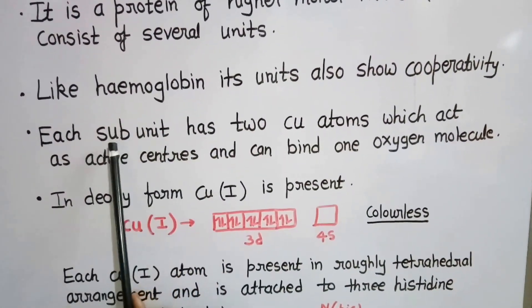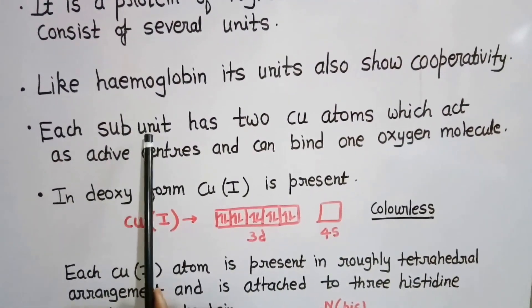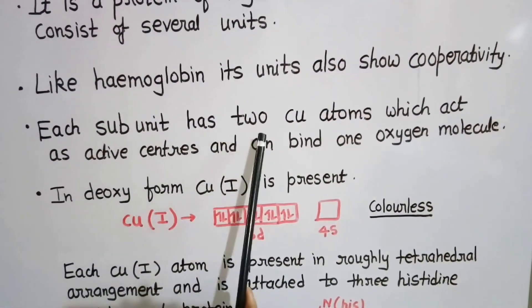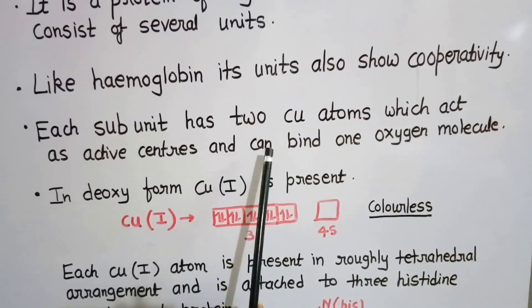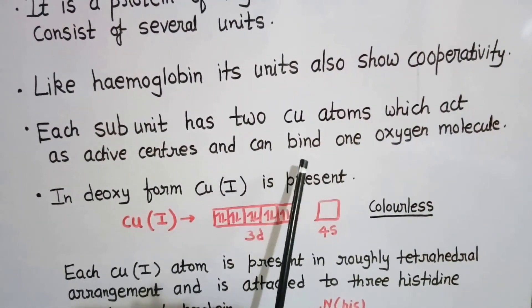In hemocyanin, each subunit has two copper atoms that act as the active center, and these two copper atoms can bind one oxygen molecule.